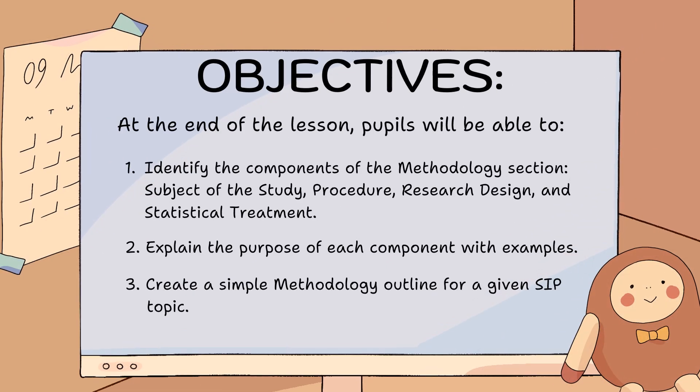At the end of the lesson, pupils will be able to: one, identify the components of the methodology section — subject of the study, procedure, research design, and statistical treatment; two, explain the purpose of each component with examples; and three, create a simple methodology outline for a given SIP topic.